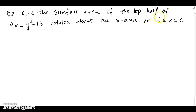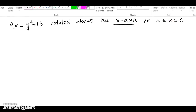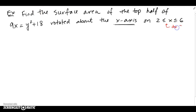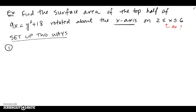Find the surface area of the top half of this parabola. This is a problem that opens sideways to the right, rotated about the x-axis on the interval between x=2 and x=6. This suggests it might be a DX problem because x-values are given. But we'll set this up two different ways and see if they both end up being the same. Since we're rotating about the x-axis, we must use 2πy ds.